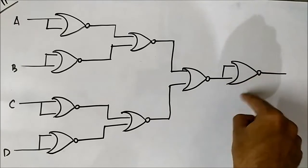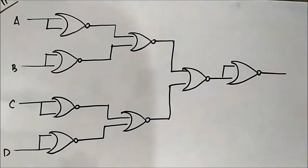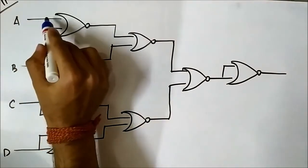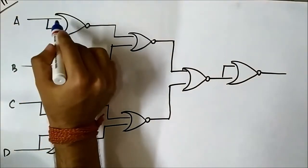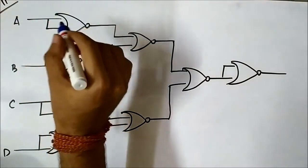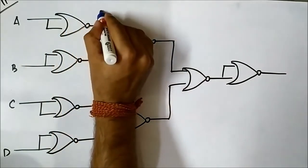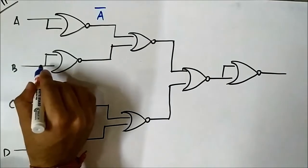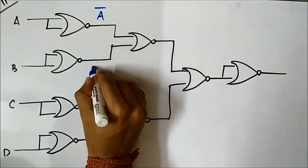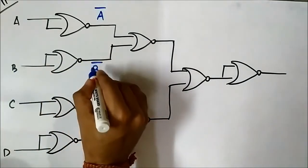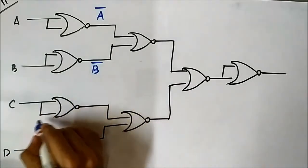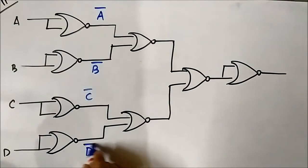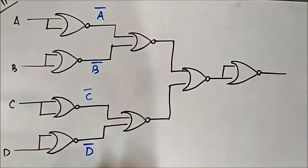In the first layer, the NOR gate with both inputs connected to A behaves as an inverter, so the output is A complement. Similarly, both inputs B give B complement, both inputs C give C complement, and both inputs D give D complement — all four are the same nature.